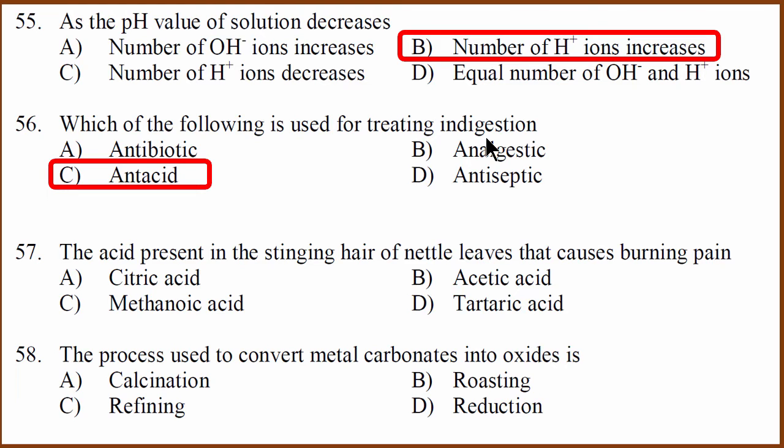Which acid is present in stinging hair of nettle leaves that causes burning pain? It is called formic acid. It's the same acid that is in ants. But IUPAC name is methanoic acid. It's also called as formic acid. Now what is the process of converting metal carbonates into oxides? The process is called calcination. This is a process that is used to convert metal carbonates to oxides.